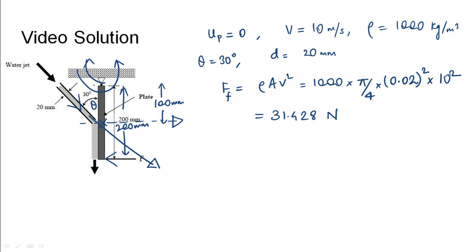These two moments would cancel out each other. Here we can see that theta is 30 degrees, so this angle would be theta and this angle would be 90 minus theta. This is the force due to fluid FF, so FF into cos of 90 minus theta.